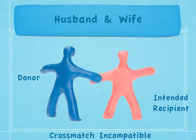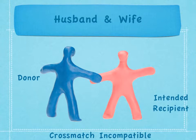In this next example, a husband and wife come forward to a transplant center. The husband wishes to donate his kidney to his wife, however there is a positive cross-match between the two, which means that the wife has antibodies against her husband. A positive cross-match between a husband and wife can be common, particularly if the woman had multiple children with her husband, because she has been exposed to her husband's genes through those pregnancies.